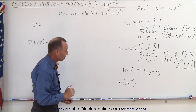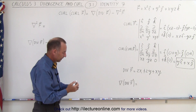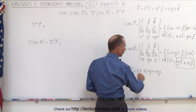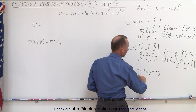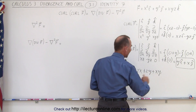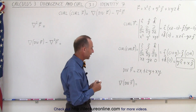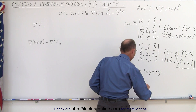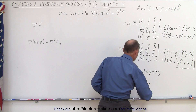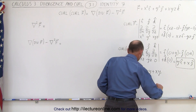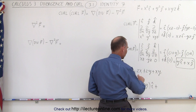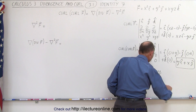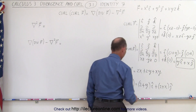Now if we take the gradient of that, we get a vector again. We take the partial of the divergence with respect to X in the I direction, the partial with respect to Y in the J direction, and the partial with respect to Z in the K direction. Notice there are no Z terms, so there is no K component. This becomes 2 plus Y in the I direction plus 2 plus X in the J direction, and no K component.